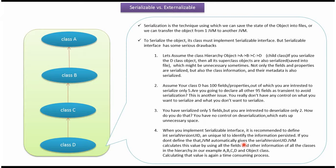When you implement Serializable interface, it is recommended to define serial version UID, which is a unique ID to identify the information persisted. If you don't define it, then JVM automatically generates the serial version UID. JVM calculates it by using all the fields and other information of all the classes in the hierarchy, and calculating serial version UID is a time-consuming process.